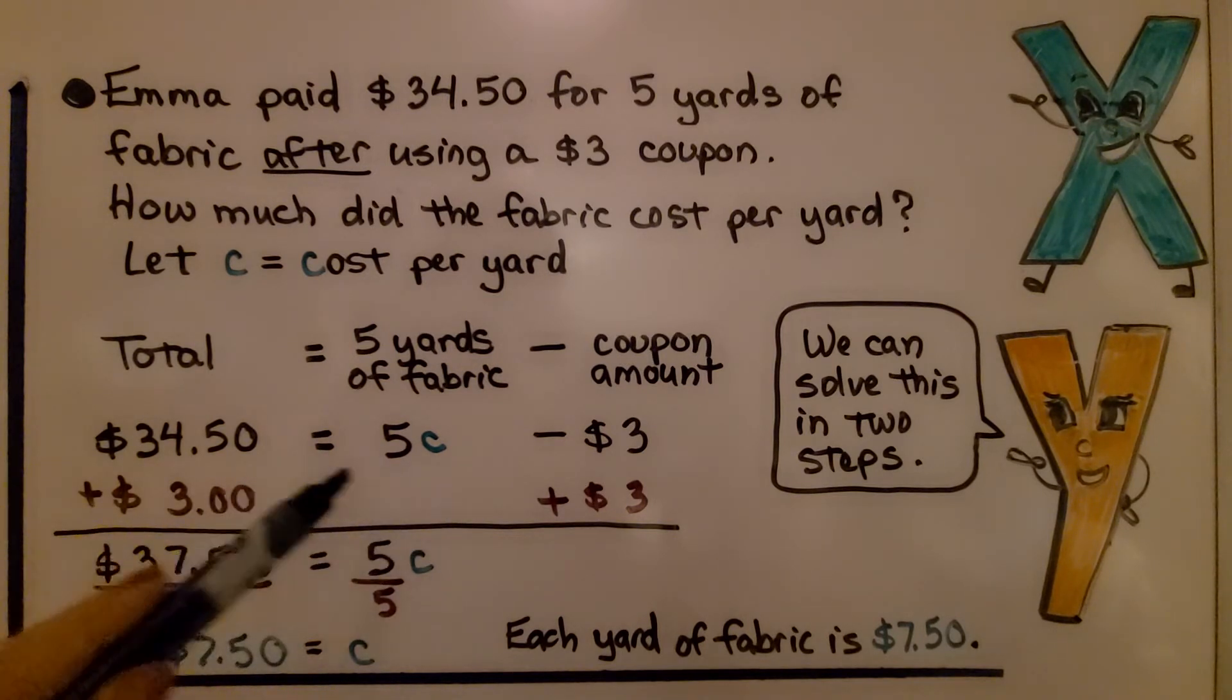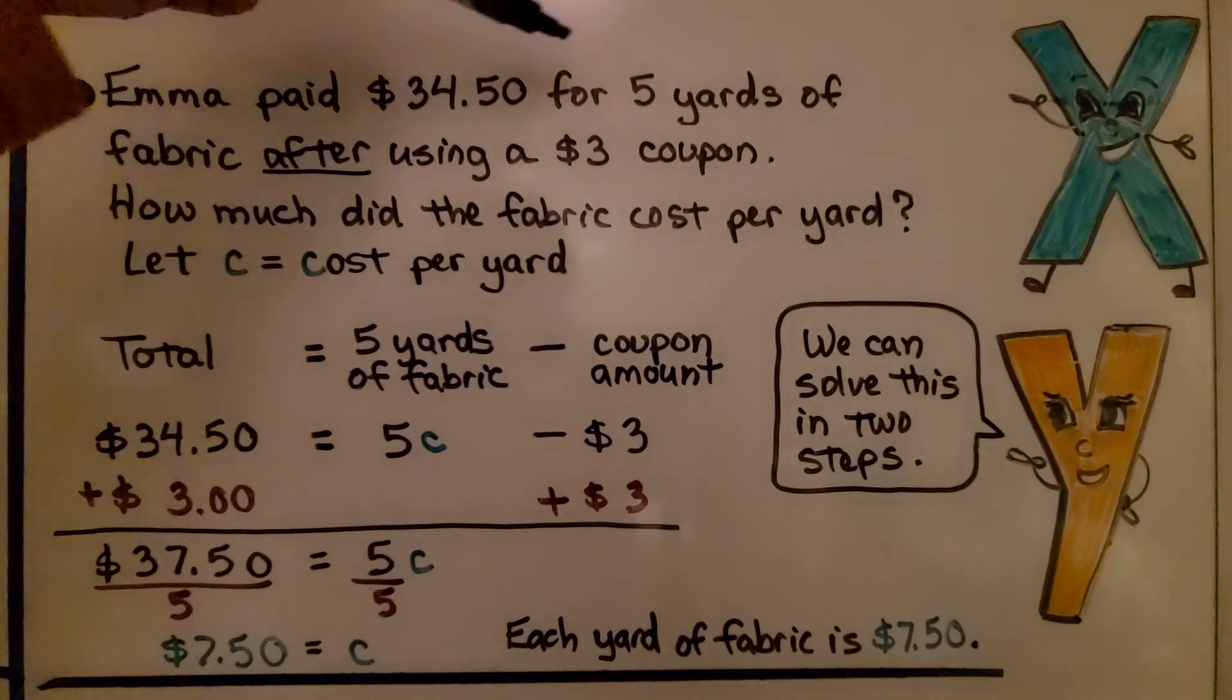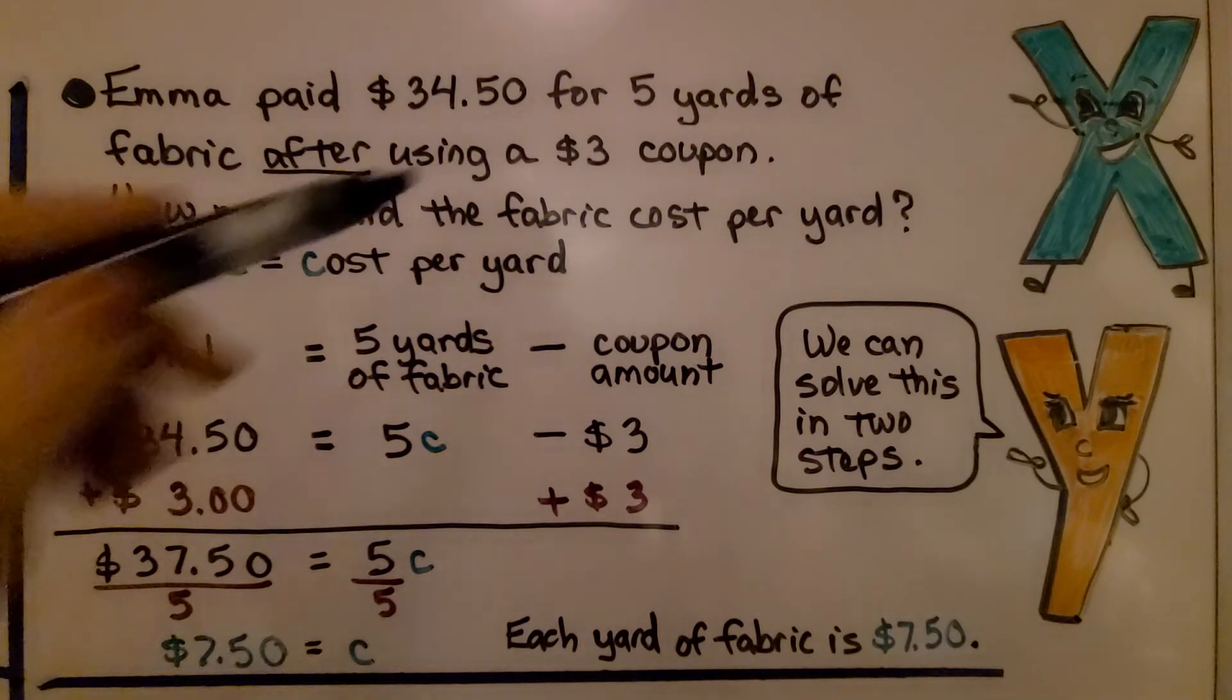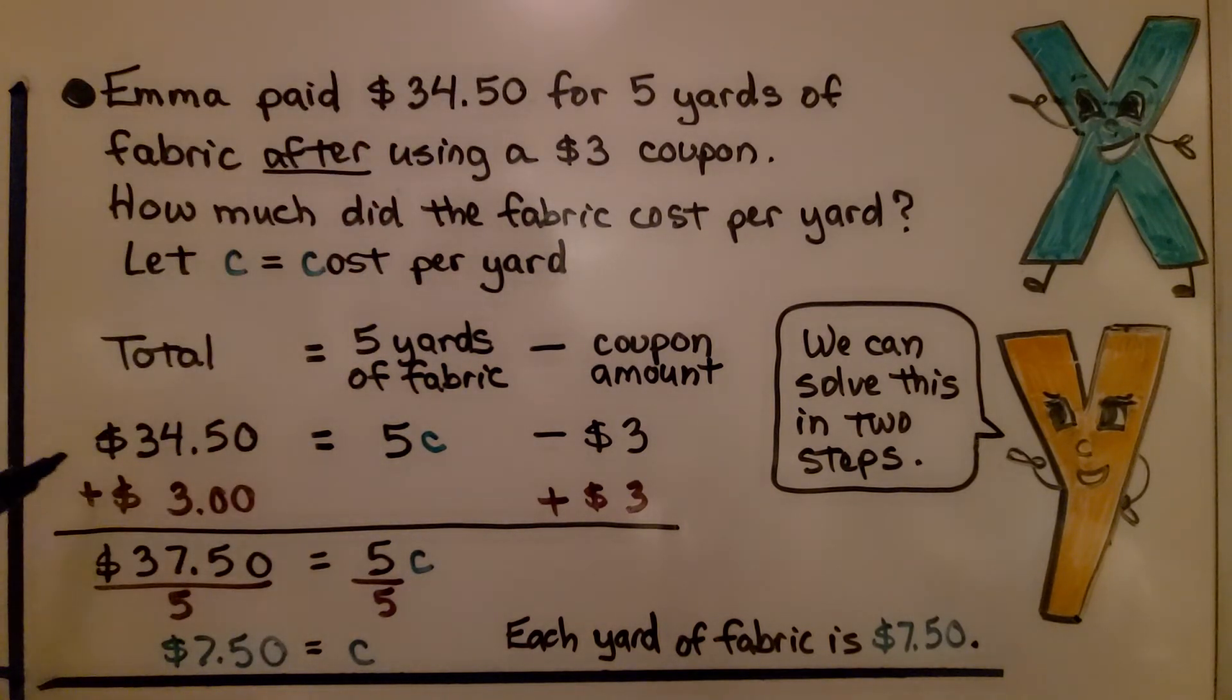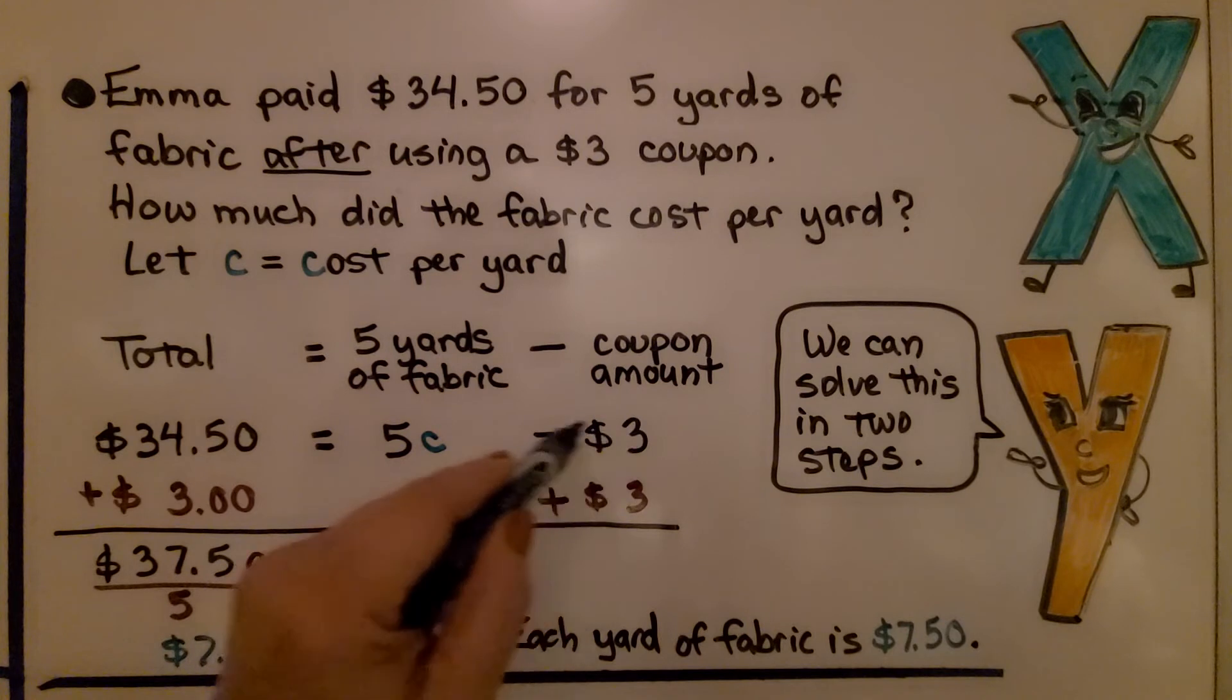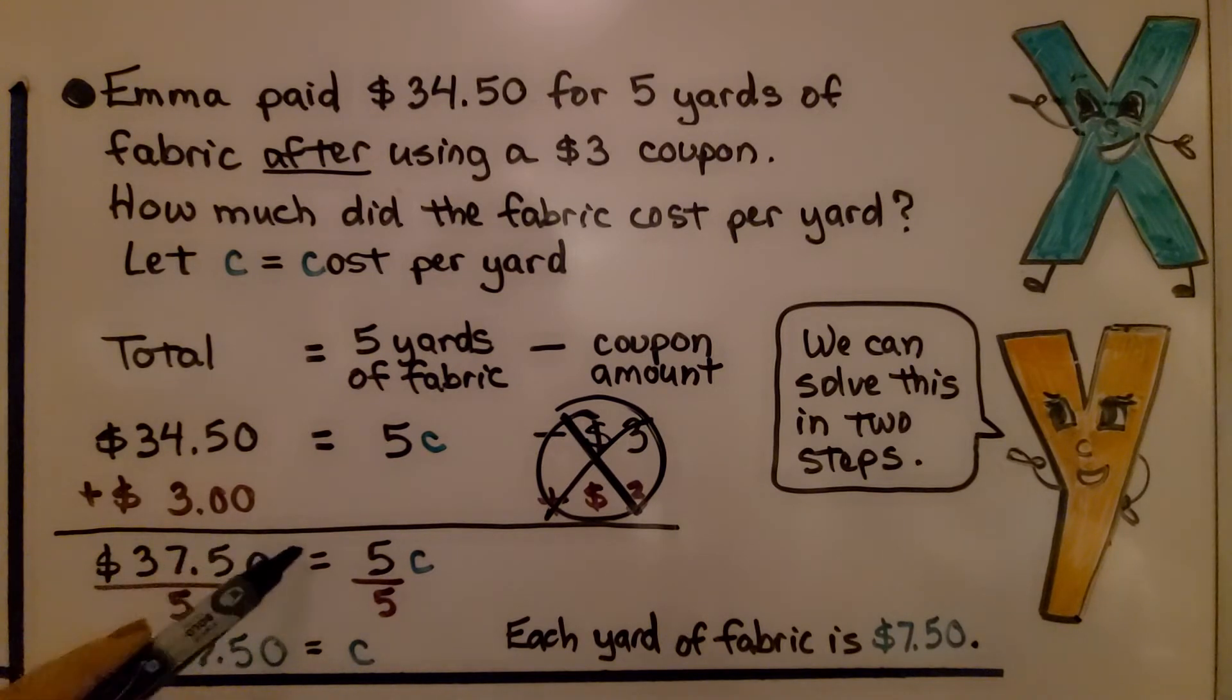We have a $3 coupon that we're going to need to add back on to the $34.50. The reason we're doing that is we can't find the price of the yard of fabric for one yard until we put this coupon back on and then divide it by 5. That will give us the true value of the 5 yards of fabric. We need to add that $3 coupon back on. So on this side, we have $34.50 plus $3.00. That's going to give us $37.50. And on this side, we add the $3 to the minus $3.00. That's going to create a zero pair and eliminate it.